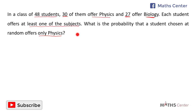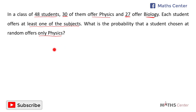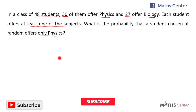Before we can find the probability that a student chosen at random offers physics only, we first have to find the number of students who offer physics only. We will get that by illustrating this information on a Venn diagram.